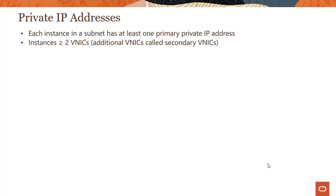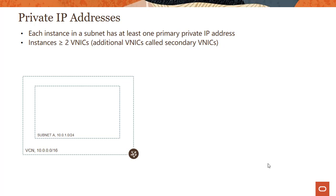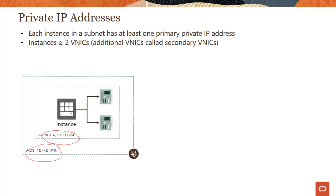Each instance can have two or more virtual network interface cards, as we looked at in the previous module. The first one is called the primary virtual network interface, or the primary VNIC. The additional ones are called secondary VNICs. You create a virtual cloud network with a CIDR notation, then divide this network into smaller networks called subnets. Instances are placed within subnets and draw their IP addressing and network configuration from the subnets in which they are placed.